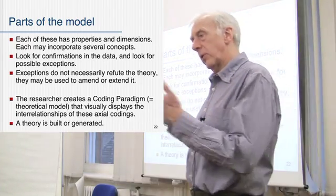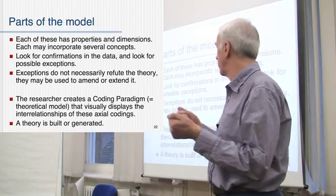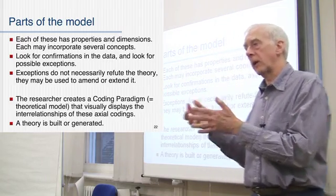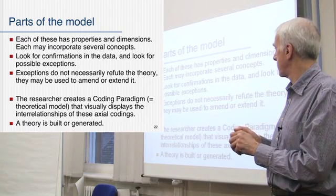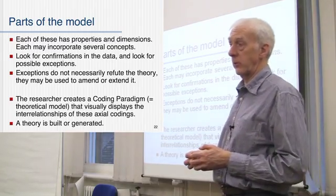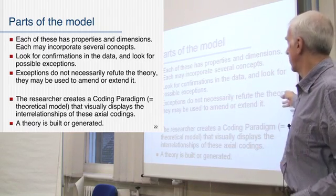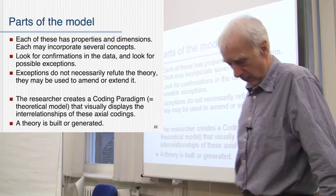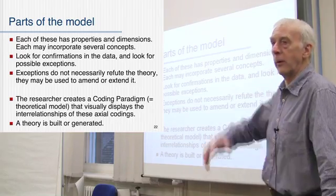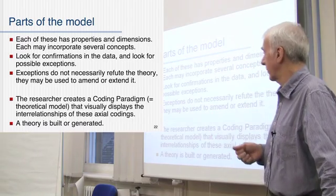The point about axial coding is: having got some coding done, having got some categorisation of the data, you can start to ask about those kinds of relationships between the codes — who's influencing this, how is this coming about, why is this particular code being affected at this position? And you go back to the data and look for possible confirmations, possible exceptions. Just as with analytic induction, the fact that you've got a disconfirmation — something that doesn't actually fit — doesn't mean you simply abandon your theory or your explanation; you may simply want to amend it, adjust it, tweak it to make it fit.